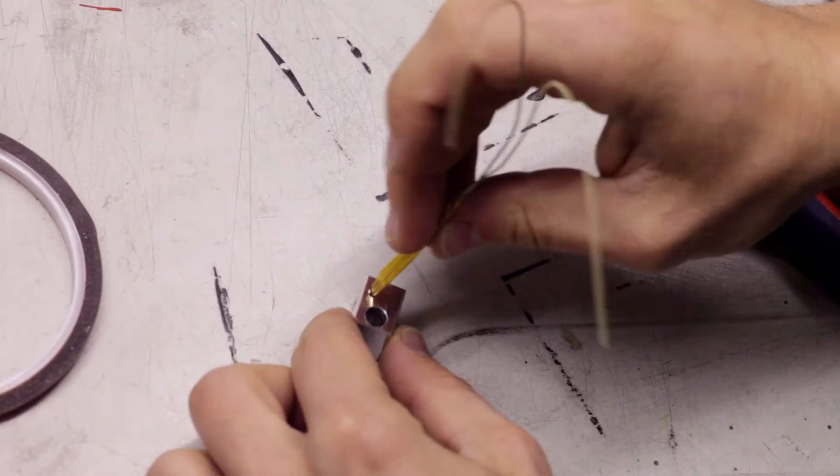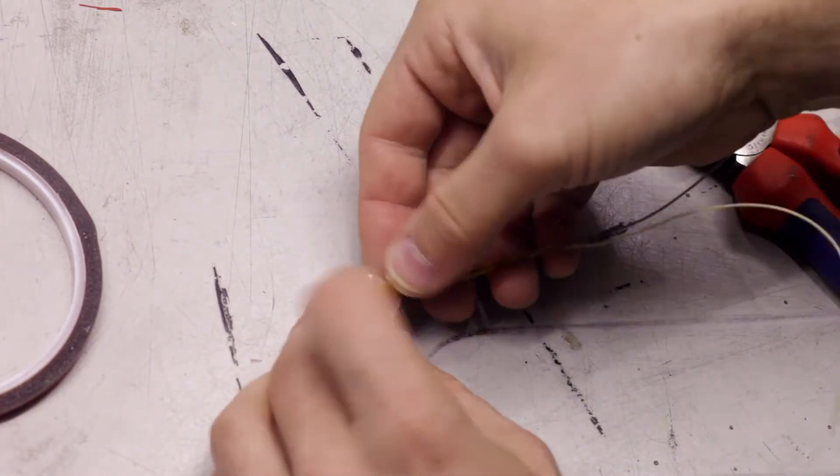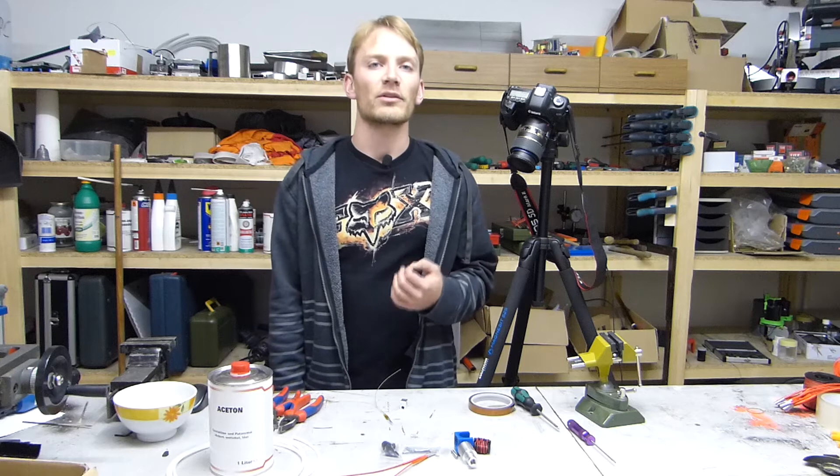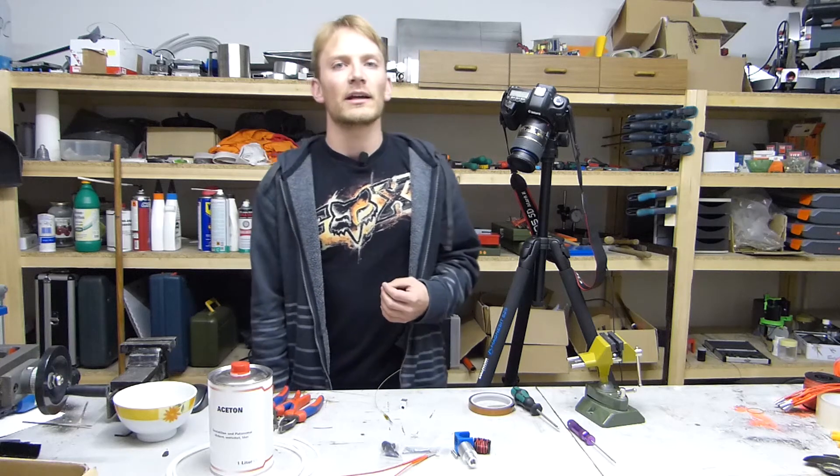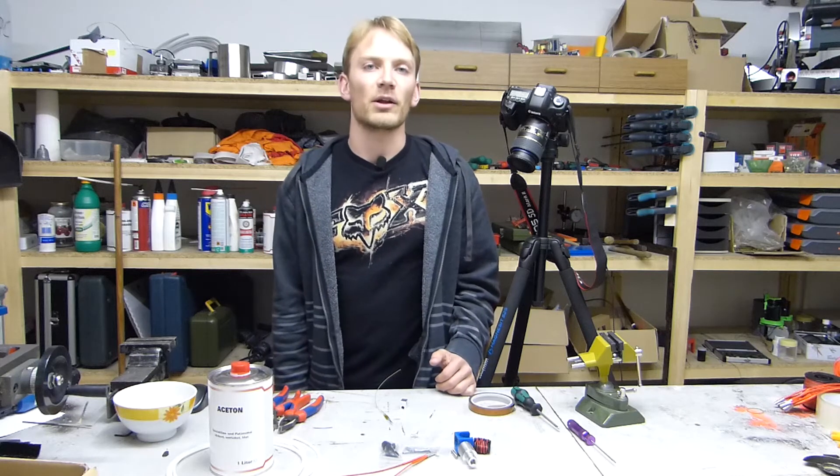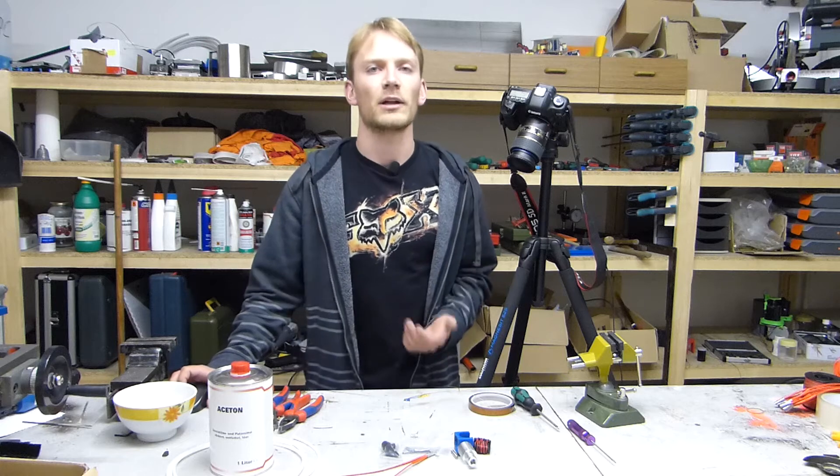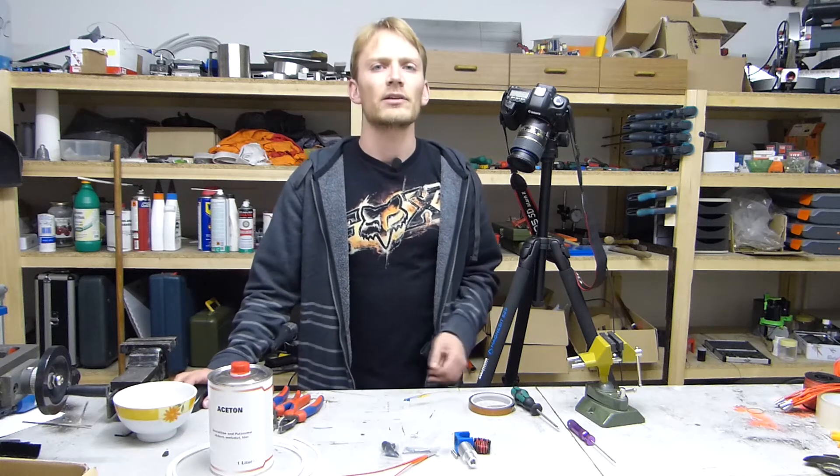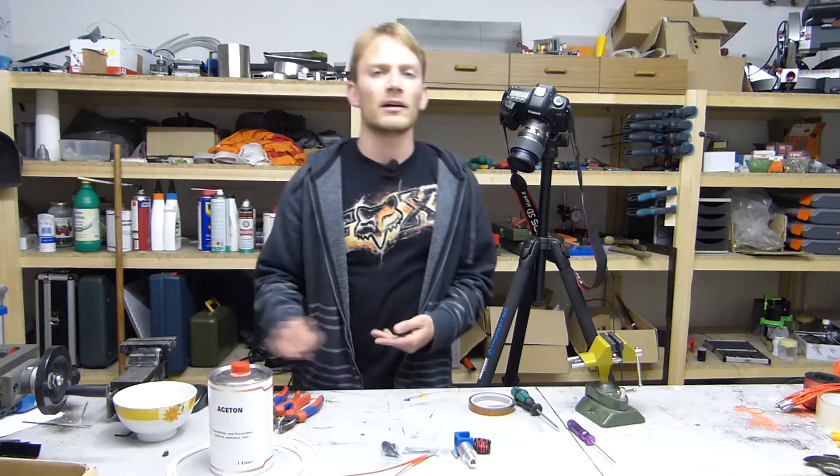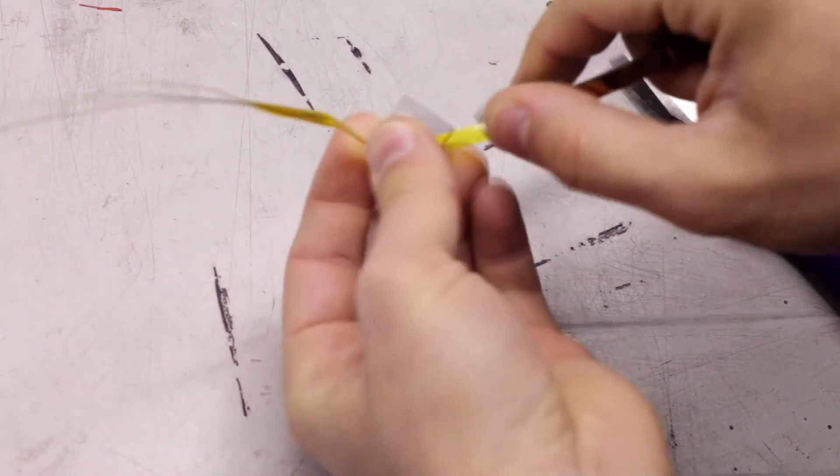Next up, slide the thermistor into its hole on the heater block and bend its legs 90 degrees so that they'll sit smooth on the side of the heater block. Also make sure that the thermistor's head is as far inside the block as possible. This next part is really critical to your hotend working reliably, so take extra care and do it as nicely as you can. Take a piece of Kapton tape and secure the thermistor to the heater block with it.